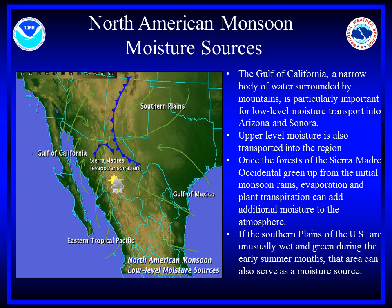The Gulf of California, a narrow strip of water surrounded by mountains, is particularly important for low level moisture transport into Arizona and the Sonoran desert. Upper level moisture is also transported into the region mainly from the Gulf of Mexico by easterly winds aloft. Once the forests of the Sierra Madre Occidental green up from the initial monsoon rains, evaporation and plant transpiration can add additional moisture to the atmosphere, which will then flow into Arizona.